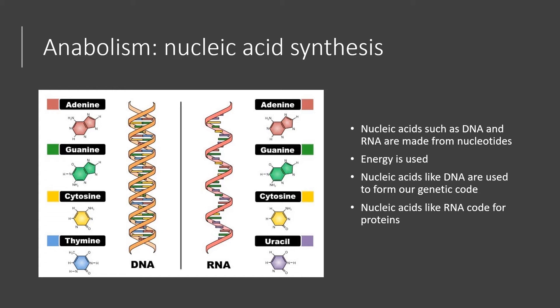Another anabolic reaction is nucleic acid synthesis. Nucleic acids such as DNA and RNA are made from nucleotides, and this takes place on the cellular level. Energy is required for these processes. Nucleic acids such as DNA are used to form our genetic code, and nucleic acids such as RNA code for proteins.